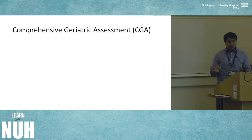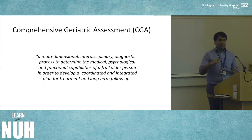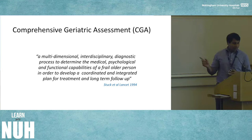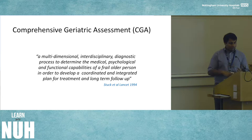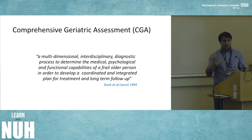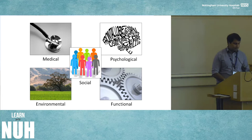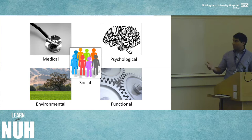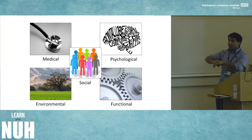CGA is a multi-dimensional, interdisciplinary diagnostic process that determines the medical, psychological, and functional capabilities of a frail older person in order to develop a coordinated, integrated plan for treatment and long-term follow-up. It comes back to five domains: medical, psychological, social, environmental, and functional. It's not just looking at the haemoglobin pre-operatively — it's looking at the whole patient and making sure anything we can optimise or modify we address before major surgery.